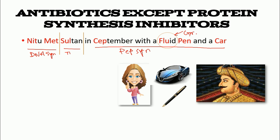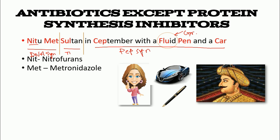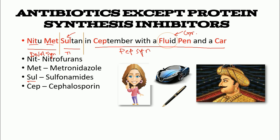Breaking it down: N-I-T stands for nitrofurans — DNA synthesis inhibitors. MET stands for metronidazole — also a DNA synthesis inhibitor. SUL stands for sulfonamides, representing Sultan — thymidine synthesis inhibition. THF stands for tetrahydrofolate — tetrahydrofolate synthesis inhibitors. Then C-E-P stands for cephalosporins — peptidoglycan synthesis inhibitors. Note that September is intentionally misspelled as 'CEP.'